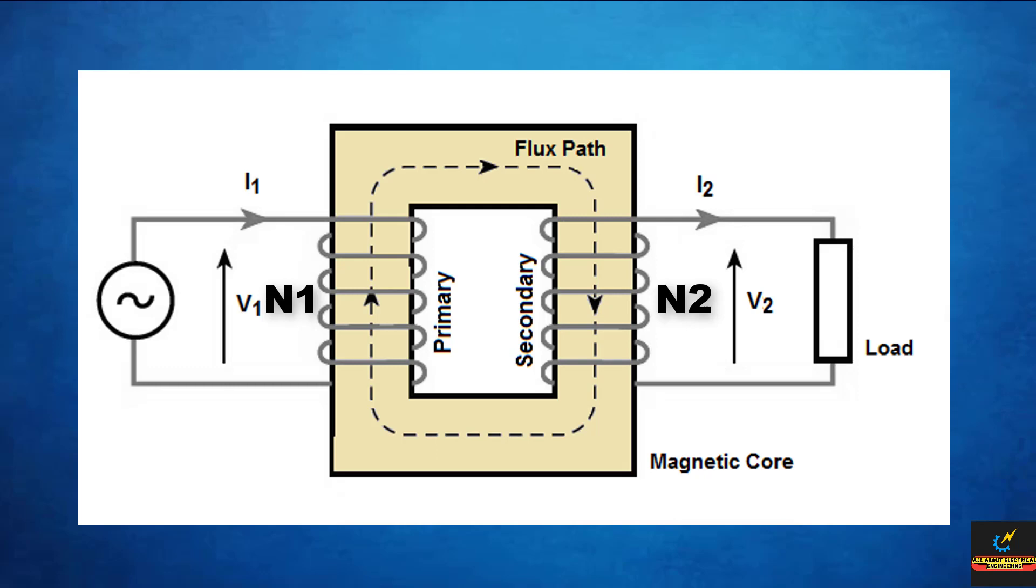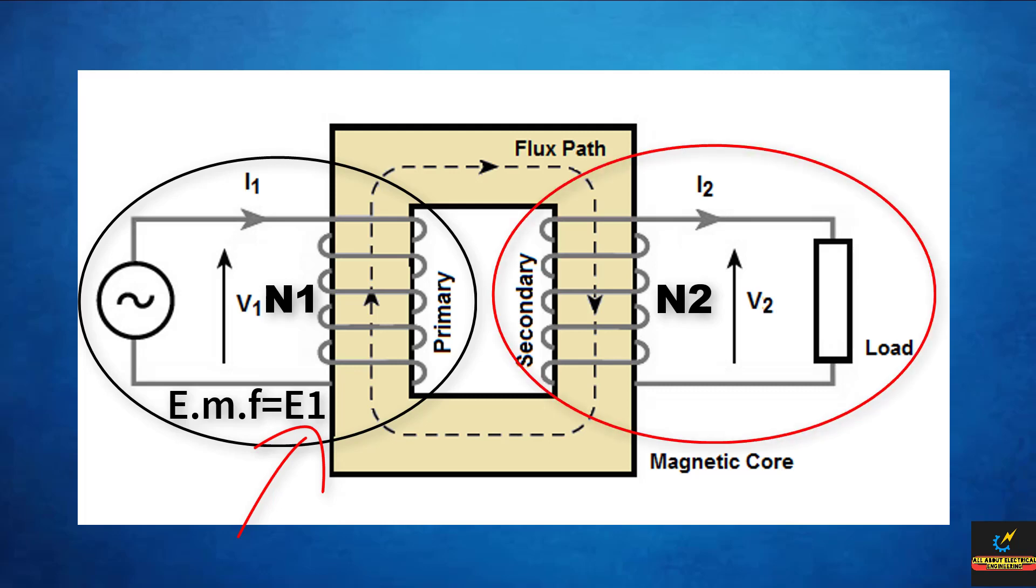Now we apply an alternating voltage V1, whose magnitude is to be changed, is connected to the primary winding. Depending upon the number of turns of the primary winding that is N1 and secondary winding that is N2, an alternating EMF E2 is induced in the secondary winding of the transformer.